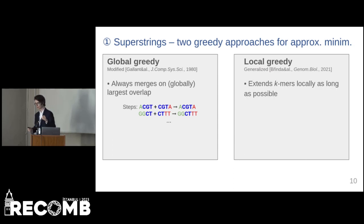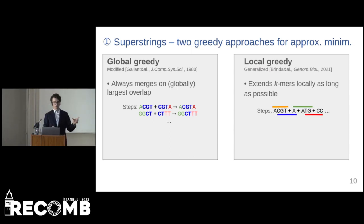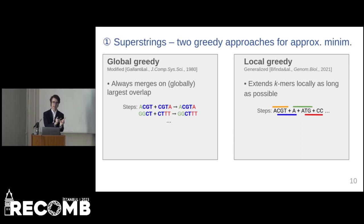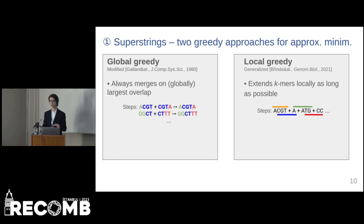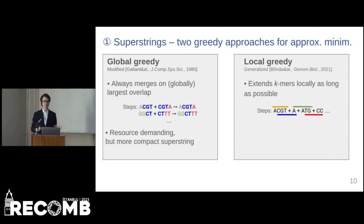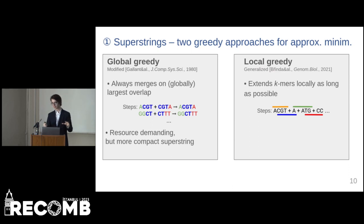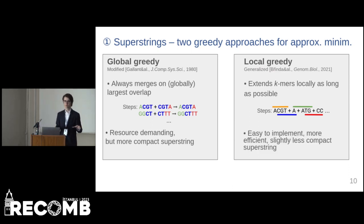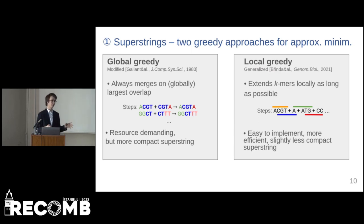In the local algorithm, we extend the k-mers locally — at each step, we have some k-mer and we find another k-mer that overlaps the most with it, doing this in both directions. The global algorithm gives better results, but as it needs to store the global state, it is more demanding on resources. The local algorithm gives slightly worse results, but it is much easier to implement and more efficient on resources, most notably on memory.